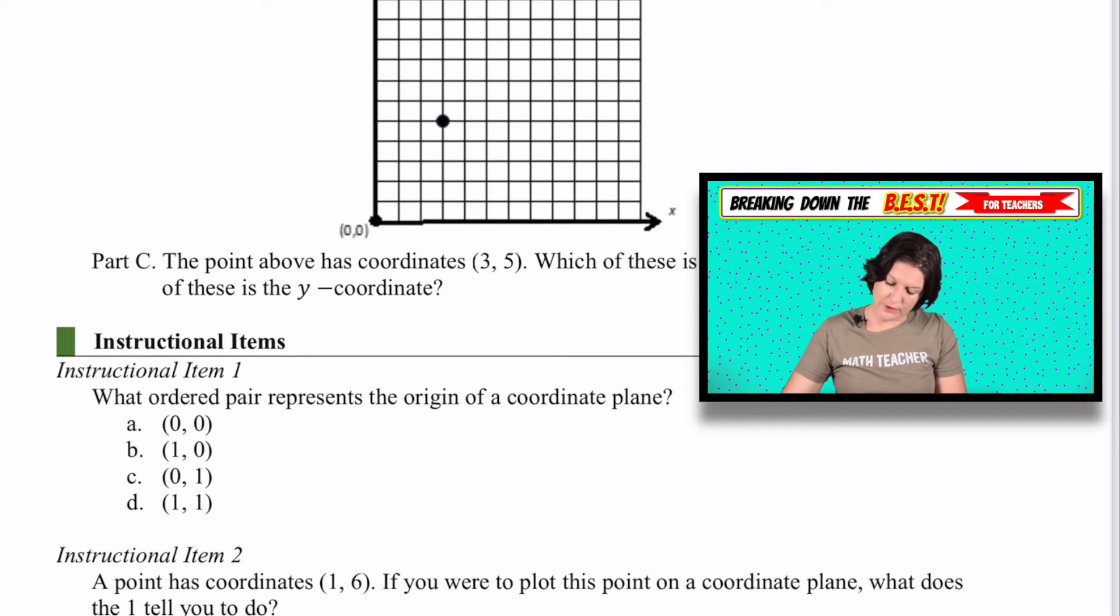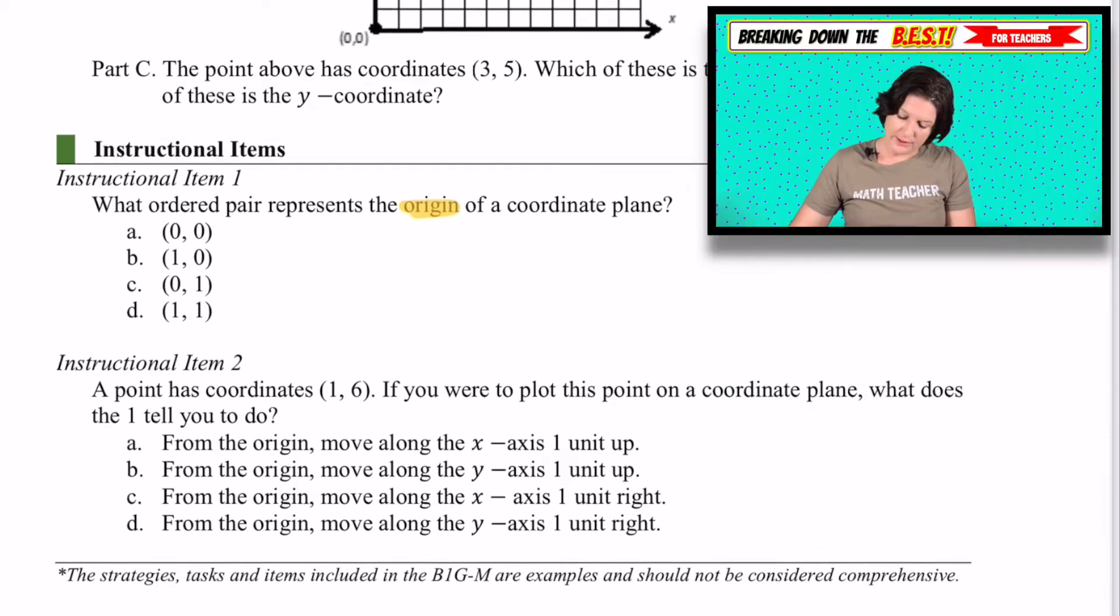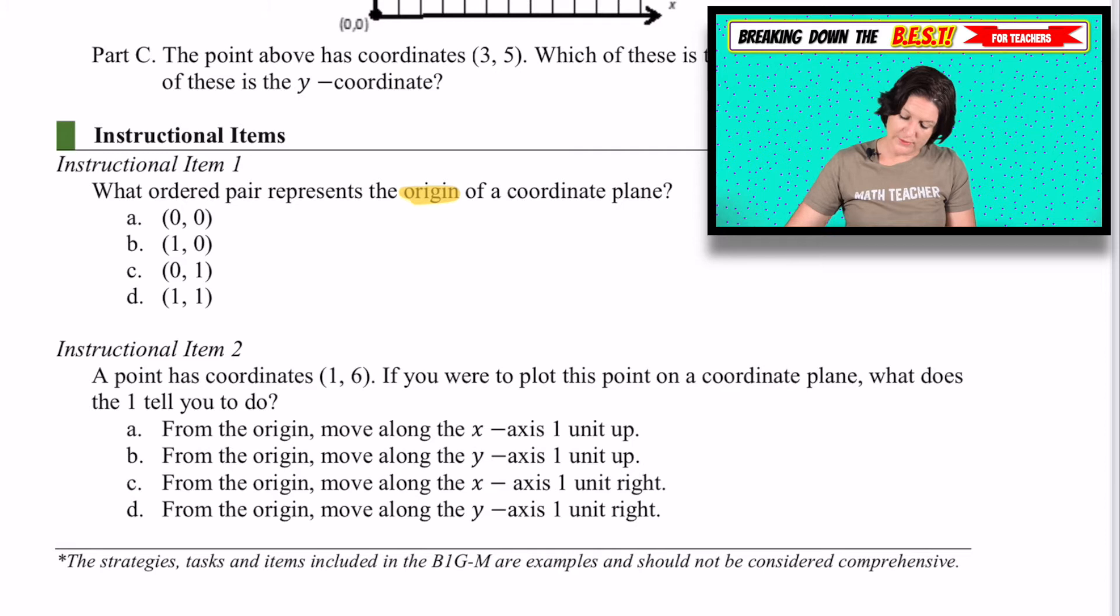Okay. And here's some other examples for you. This one's just calling out the origin and this one, again, understanding what each of the coordinates mean. So figuring out which one of those makes sense, which would be from the origin. We move along the x-axis one unit to the right, which would be C. Okay. All right. I think that's it for going over the standard.